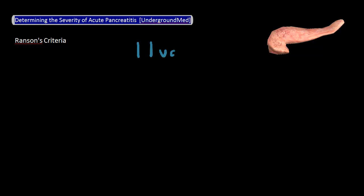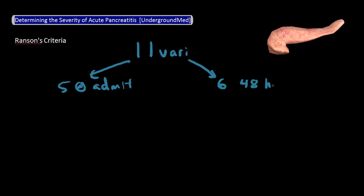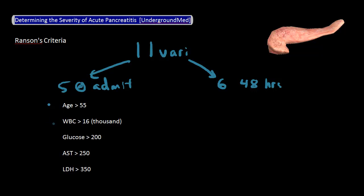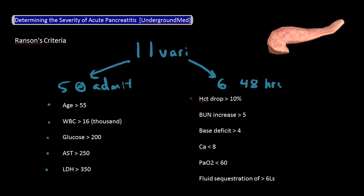What this score tries to do is to look at a set of 11 variables — five during the patient's admission and another six 48 hours later. The five parameters to look at at admission include: age greater than 55, a WBC count greater than 16, a glucose level greater than 200, an AST level greater than 250, and an LDH level greater than 350.